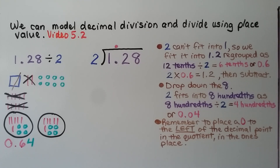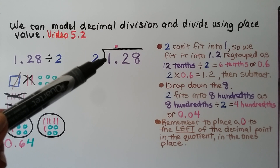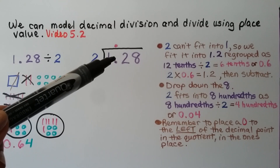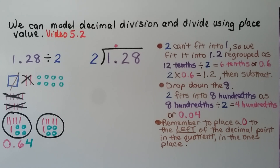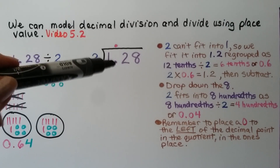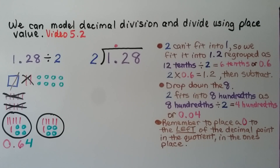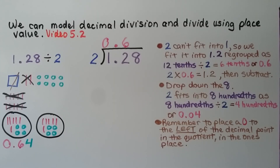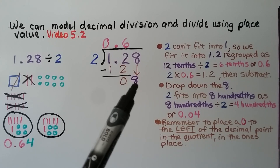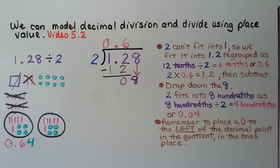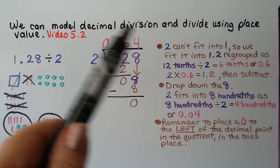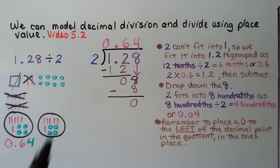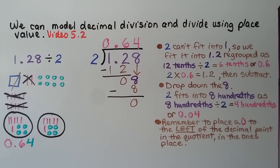Doing it using long division: 2 cannot fit into 1, so we fit it into 1 and 2 tenths regrouped as 12 tenths. 2 can fit into 12 six times. Our decimal point goes directly above the decimal point in the dividend. Because our quotient is a decimal number with nothing in the ones place, we put a zero there. 2 times 6 is 12; we write it and subtract, getting zero. The 8 drops down — 2 fits into 8 four times. 2 times 4 is 8; we subtract and get a remainder of zero. We have 64 hundredths, just as we got with the models.